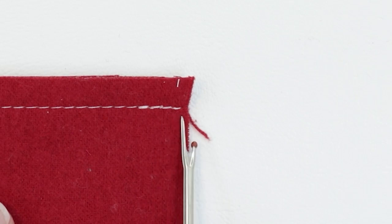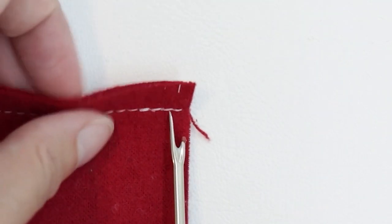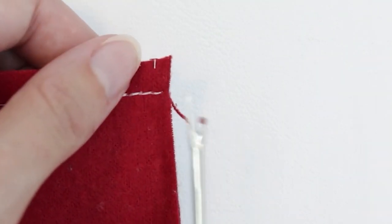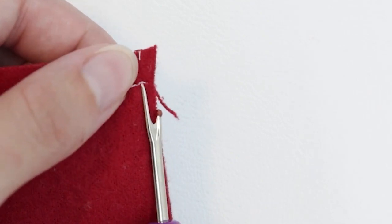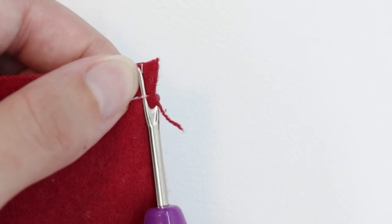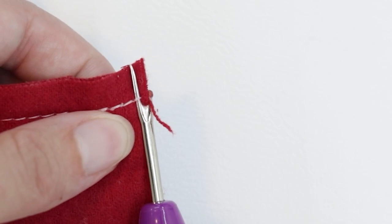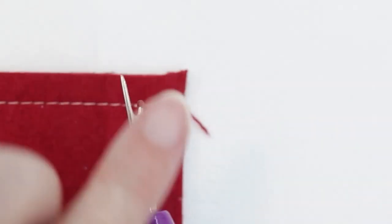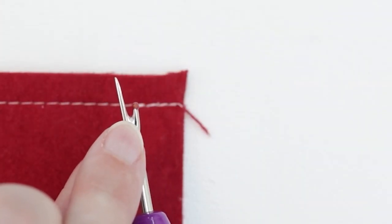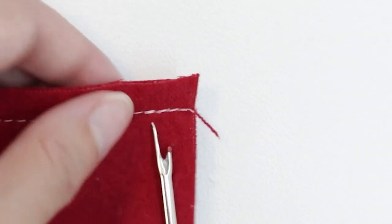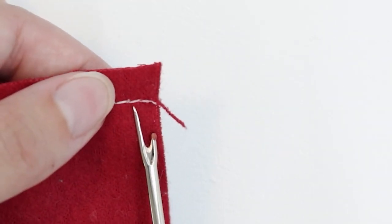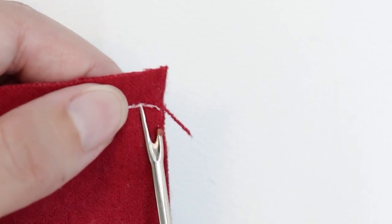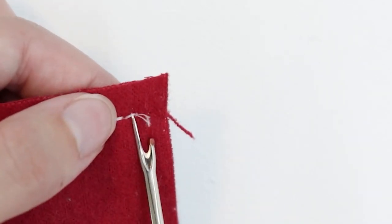I like to start by unpicking the section with the backstitching. You're going to take your seam ripper and you're going to slide it under a stitch, and then slide it up. At the base of the seam ripper is a little blade, so that will cut your stitch. In the section where you've backstitched, do that under every single stitch.